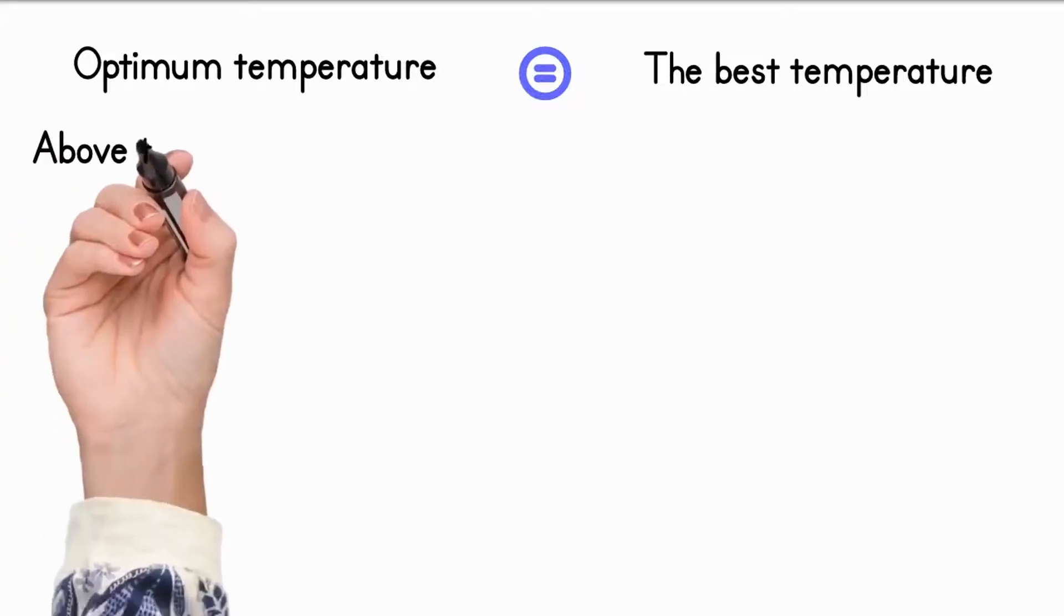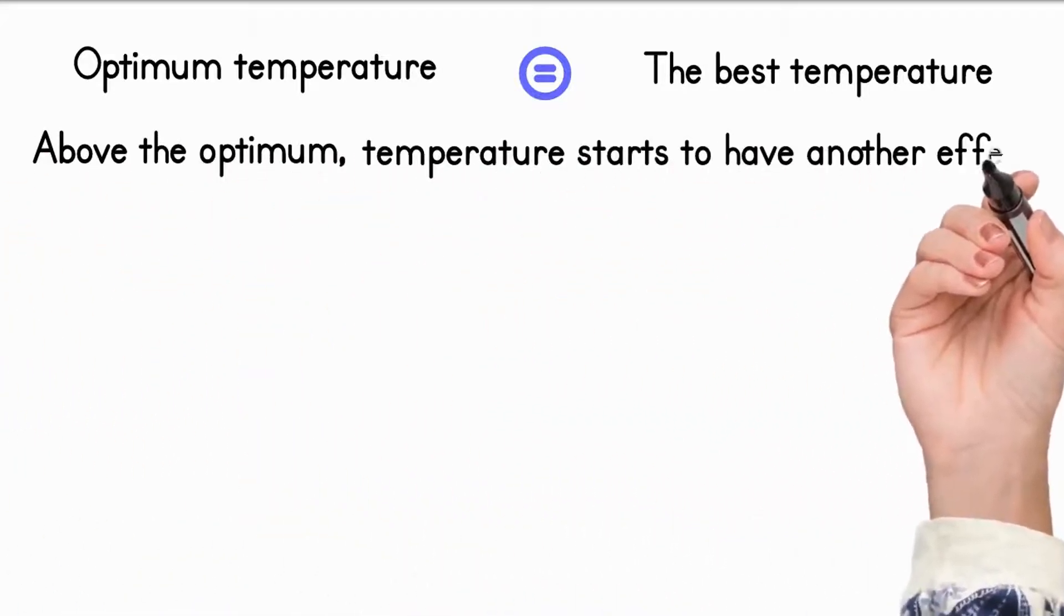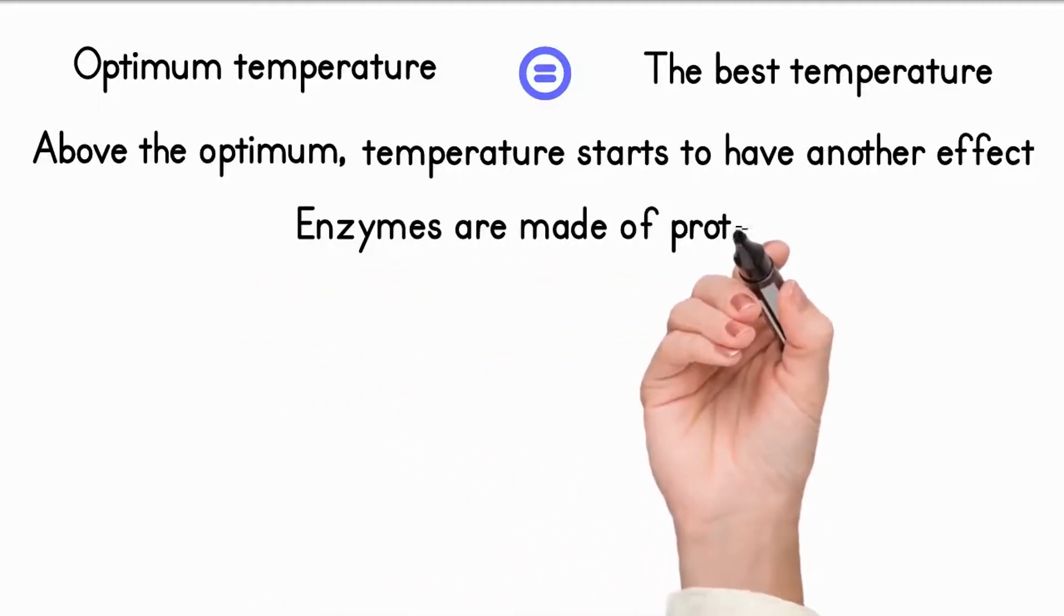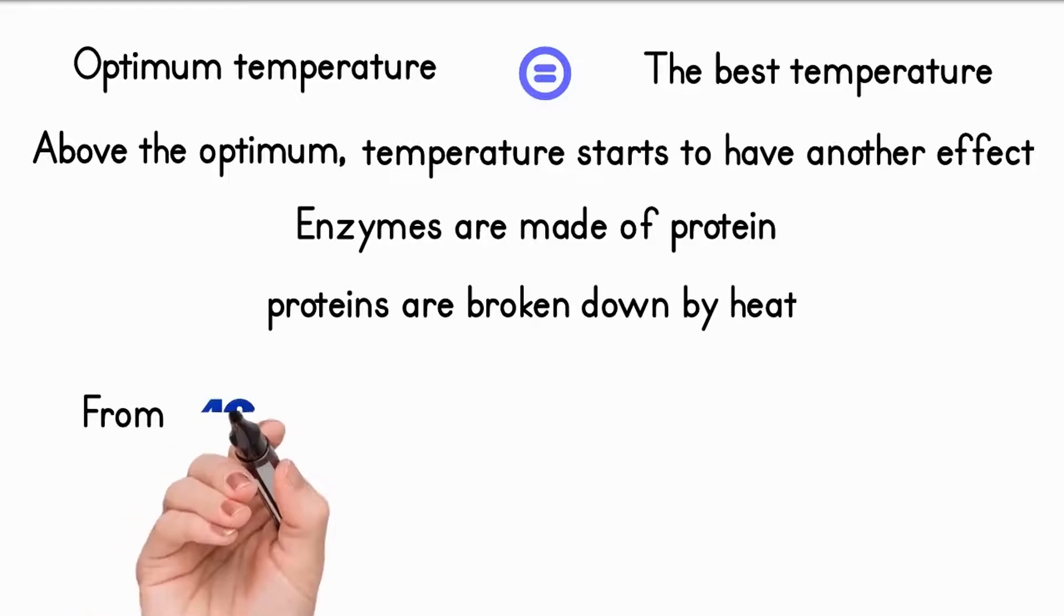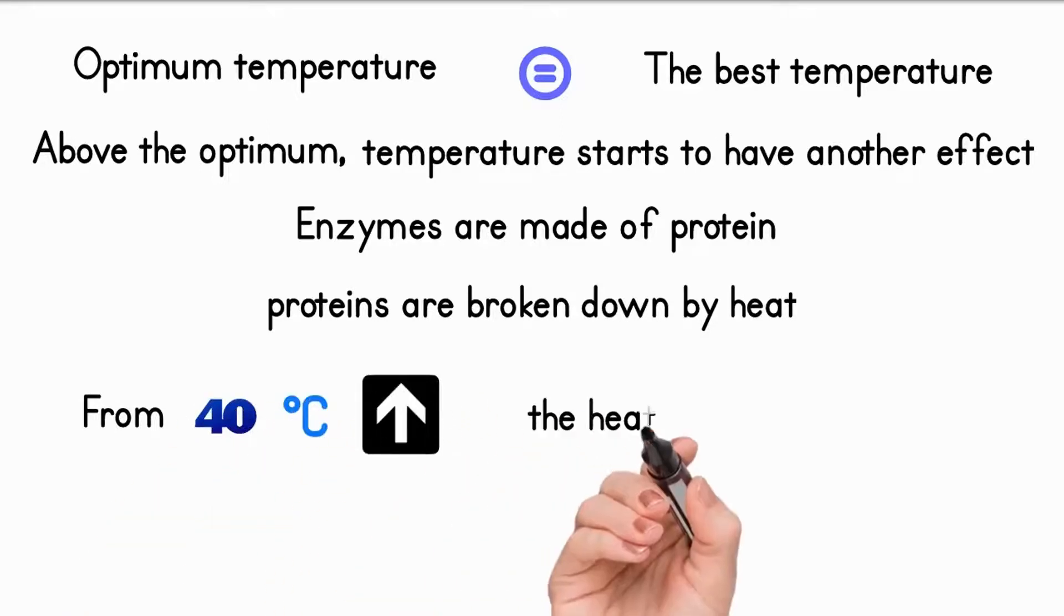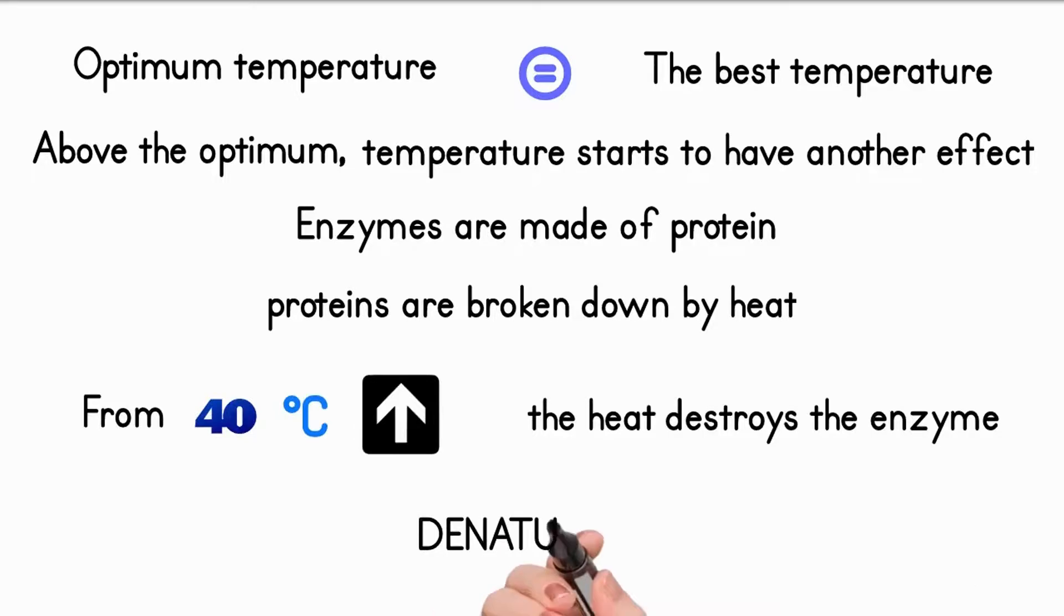However, above the optimum, temperature starts to have another effect. Enzymes are made of protein and proteins are broken down by heat. From 40 degrees centigrade upwards, the heat destroys the enzyme. We say that it is denatured.